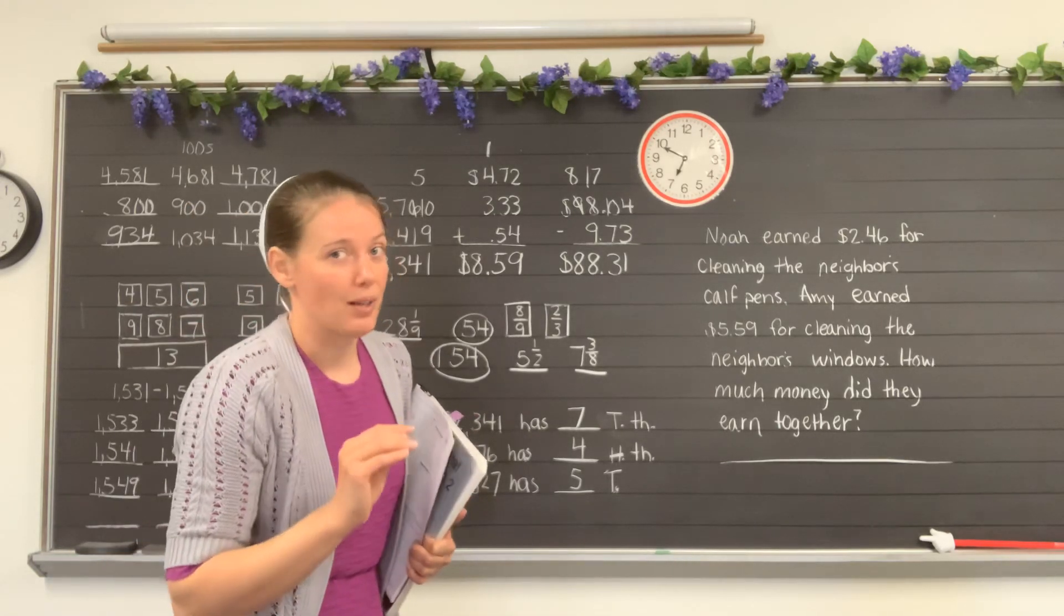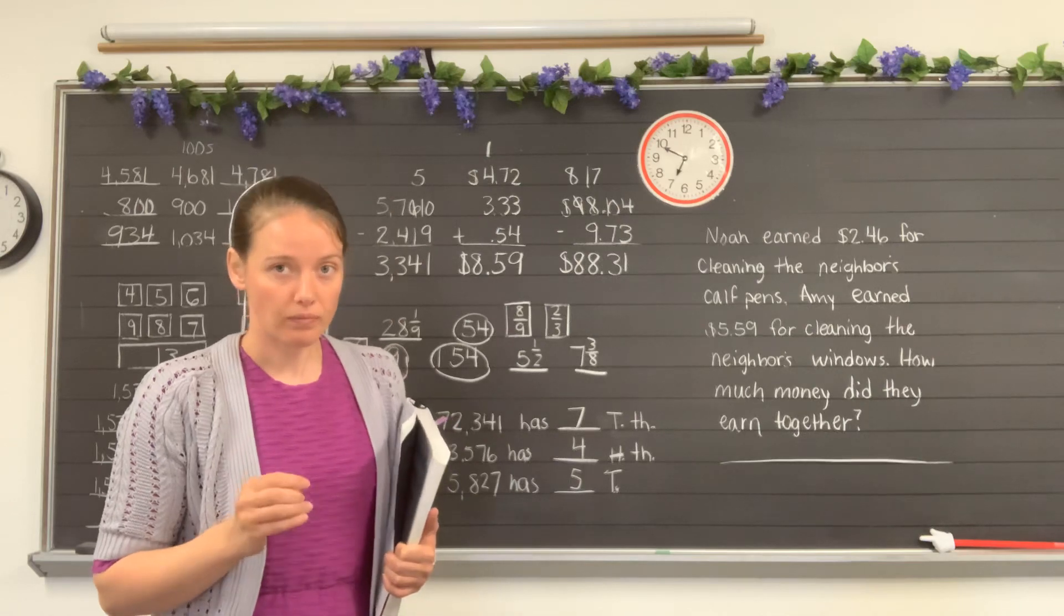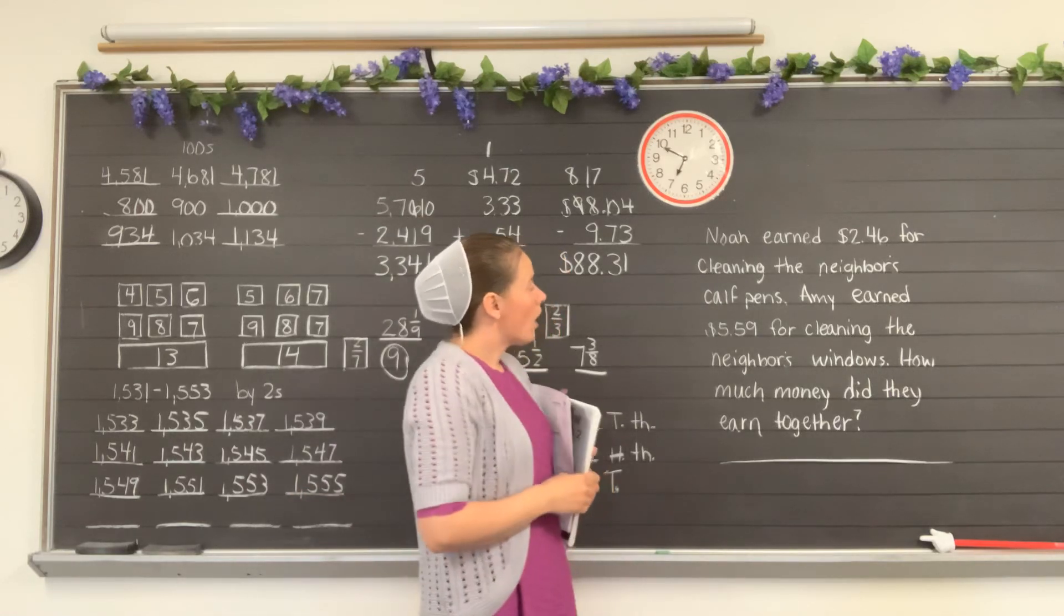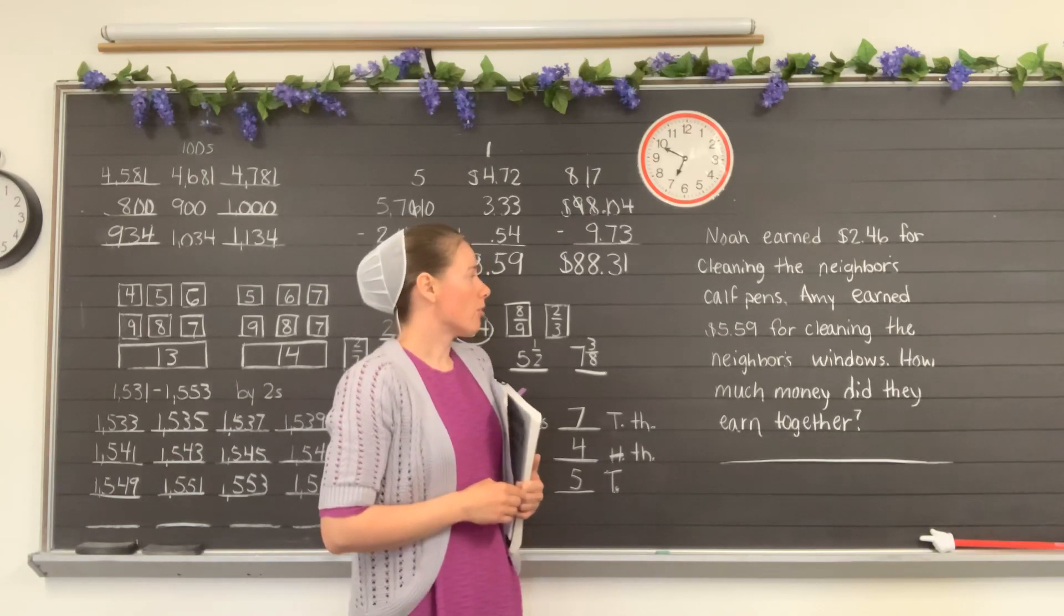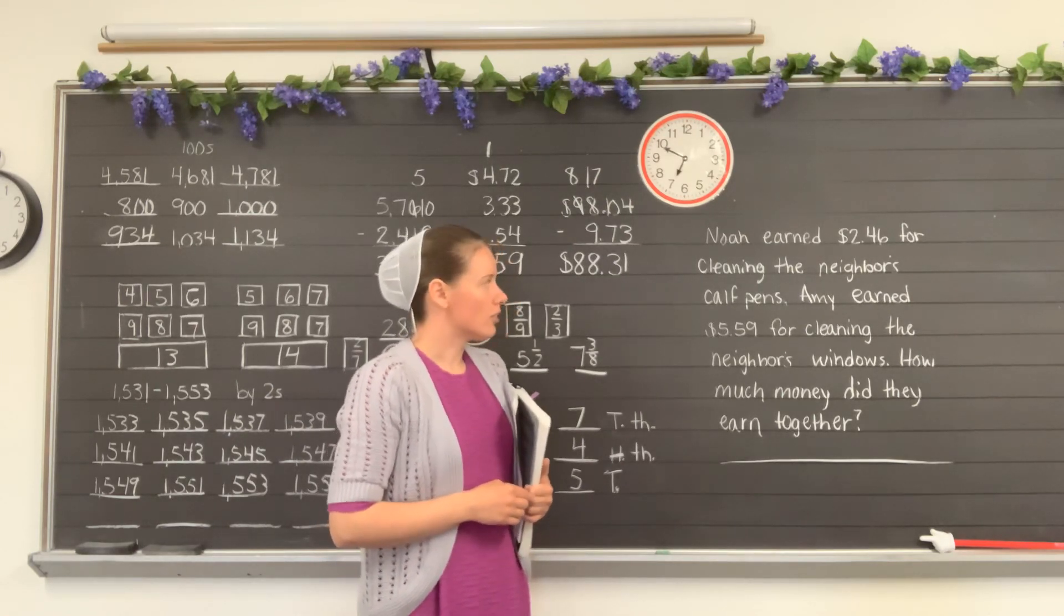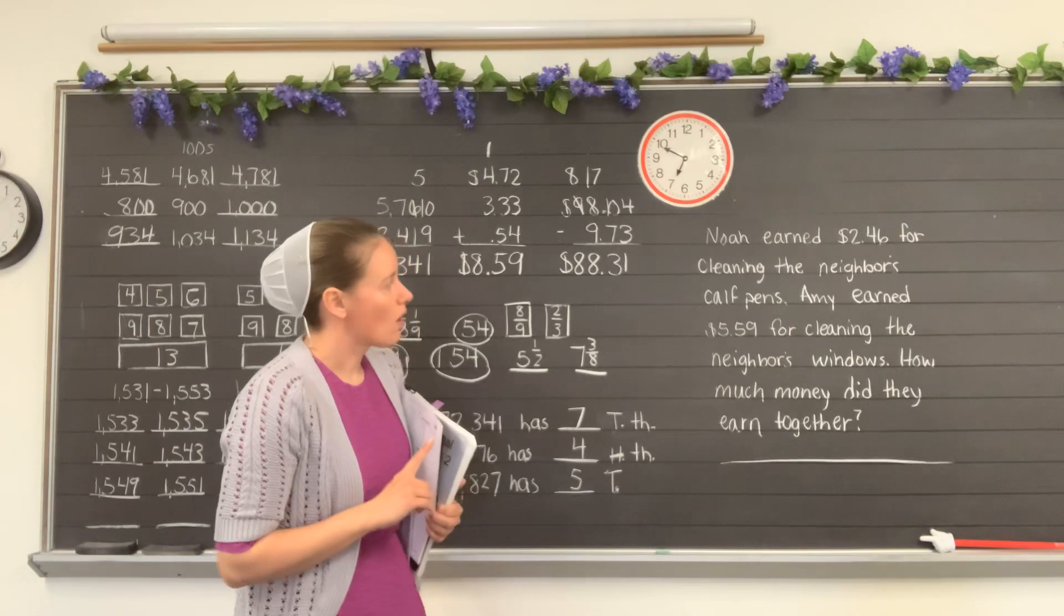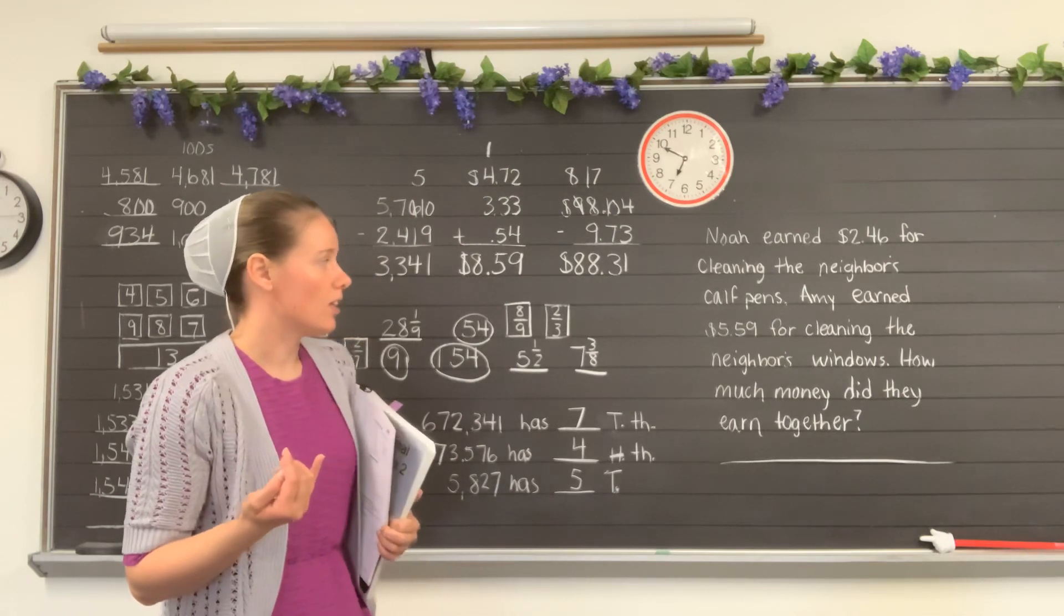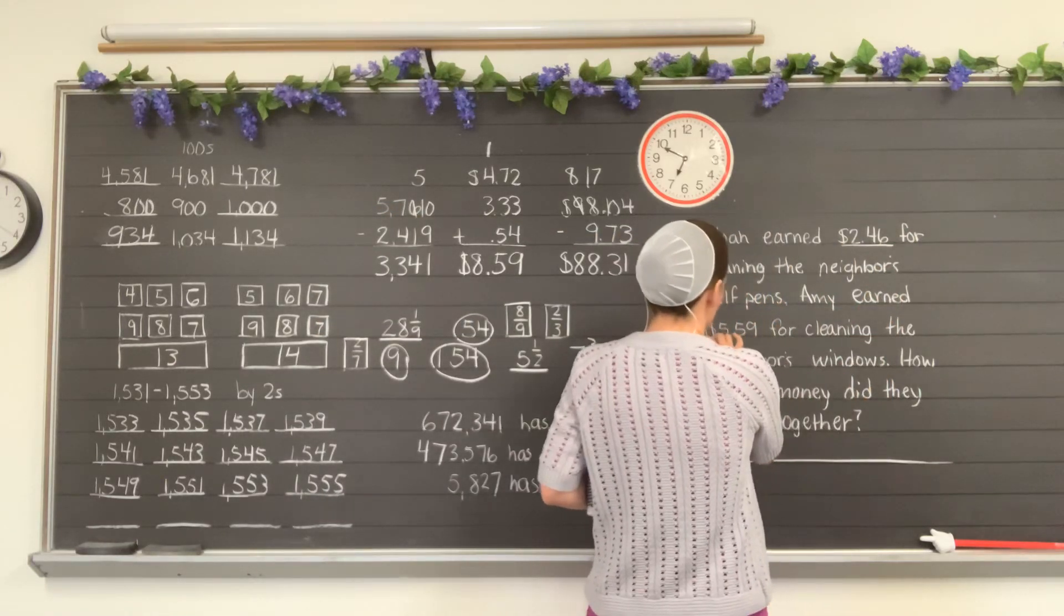Let's think on story problems now. So remember for story problems, we think carefully through the problem and we read it, try to understand what it's telling us. It says, Noah earned $2.46 for cleaning the neighbor's calf pens. Amy earned $5.59 for cleaning the neighbor's windows. How much money did they earn together? So you're thinking about Noah working and he earned $2.46 for cleaning the neighbor's calf pens, and then Amy, she earned $5.59 for cleaning the neighbor's windows.